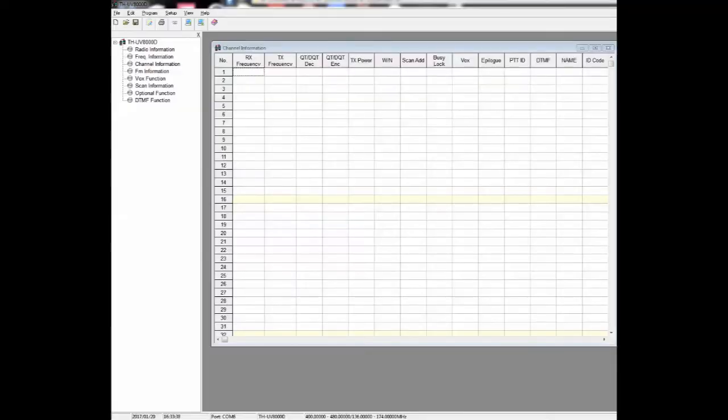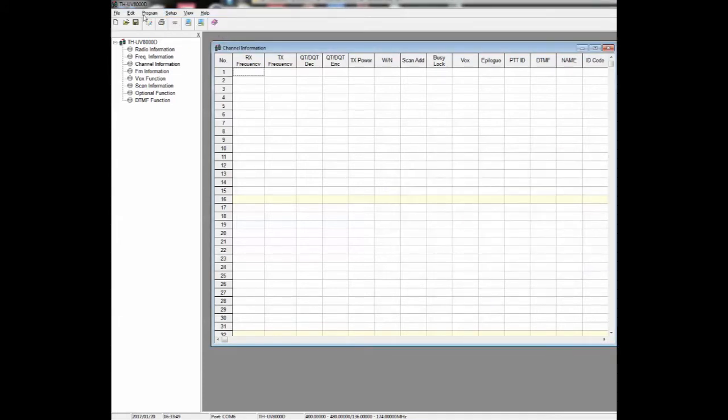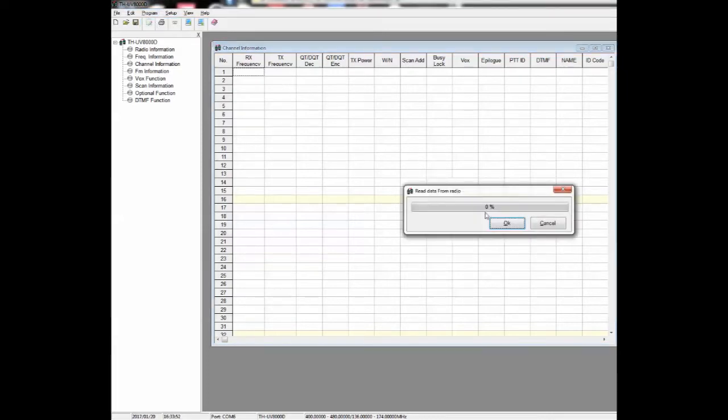We're back at the computer after swapping the red and white wires, which is transmit and receive. We're still on COM6 and we'll see if we can now read from the radio by swapping those wires. Indeed we're getting the green bar of life, which means the umbilical between the TYT-8000 and my computer is working fine.